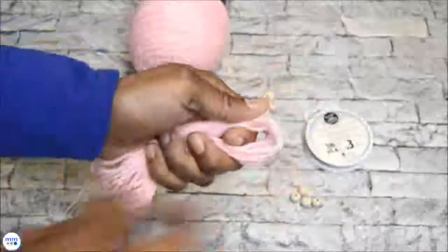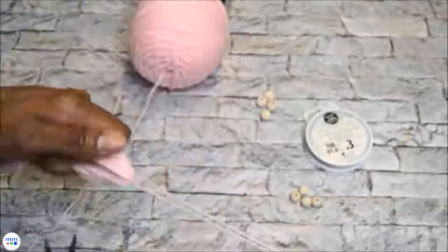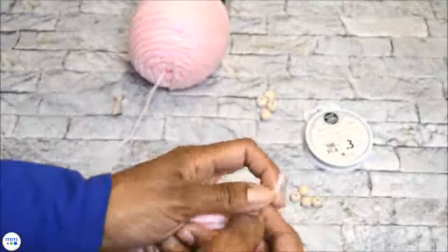Gently pull the yarn off your hand and run a 12 inch long piece of yarn through the loop and knot in place. Now cut the bottom loop.